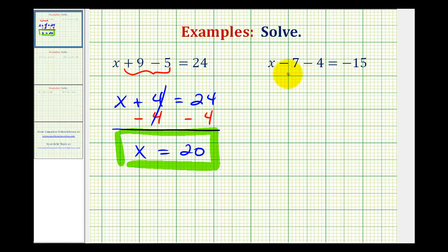Looking at our second example, we can also simplify the left side of the equation before we solve for x. We see minus 7 minus 4, but we can think of this as negative 7 minus 4, which would be equal to negative 11. But instead of writing x plus negative 11, that's the same as x minus 11. So we have x minus 11 equals negative 15.